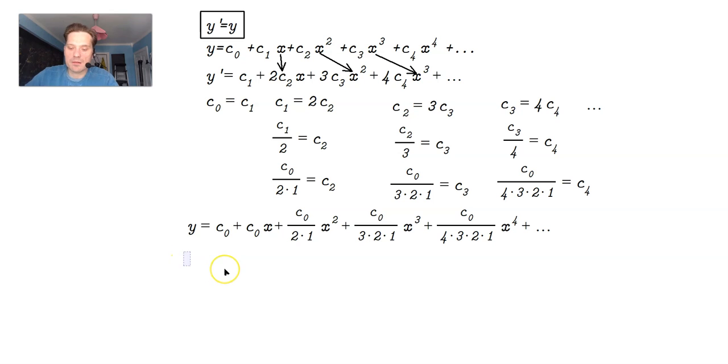So that means specifically we can write y is equal to c sub 0 plus c sub 0 x plus c sub 0 over 2 factorial x to the second plus c sub 0 over 3 factorial x to the third plus c sub 0 and then 4 factorial x to the fourth plus dot dot dot.